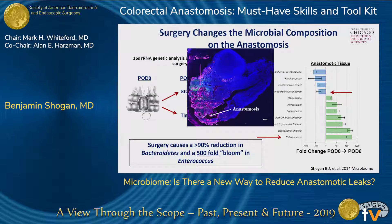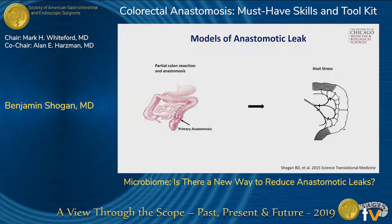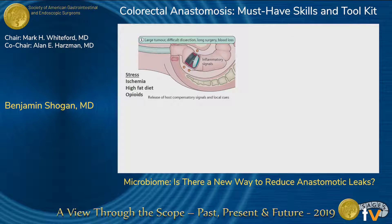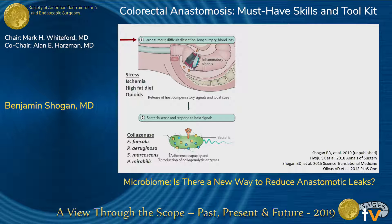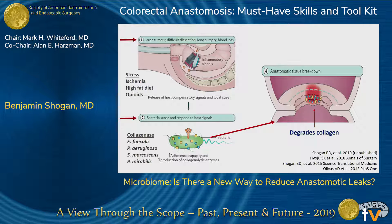Over the last couple of years we've developed a bunch of different models to look at this, and they all sort of do the same thing. We give a mouse or a rat an anastomosis and then expose it to some type of host stress. The stresses we've been using are ischemia, high-fat diet — we know obese patients are at risk — and opioids as well. What we found in all of these is that under the right conditions there's proliferation of different collagenase organisms — enterococcus, pseudomonas, serratia, or proteus — that when they develop a collagenase phenotype, they can bind to an anastomosis in animals and cause it to degrade.